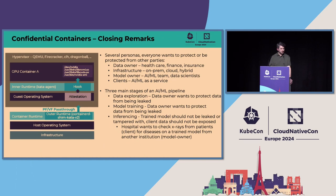Some closing remarks: RAG LLM is a special example, but looking at all AI ML pipelines and personas, there's always someone who wants to protect data and always some stage in the AI ML pipeline you want to protect, which confidential containers can help mitigate. But nothing will protect your data if you're running a random shell script from the internet inside your confidential environment that does a reverse shell to an attacker and leaks your data.